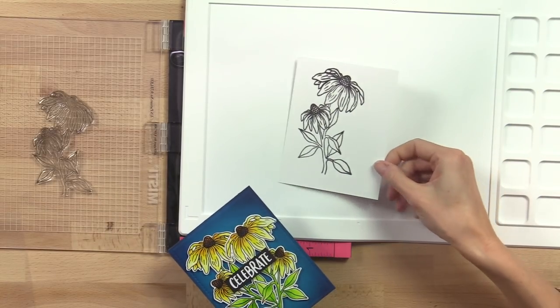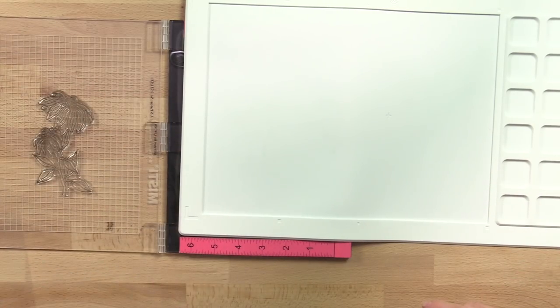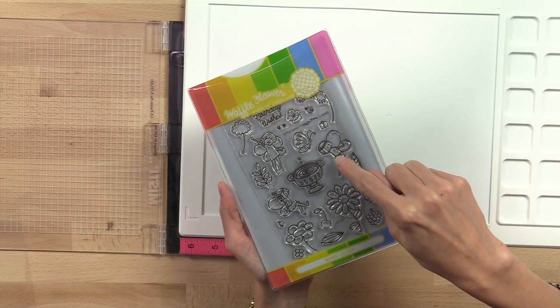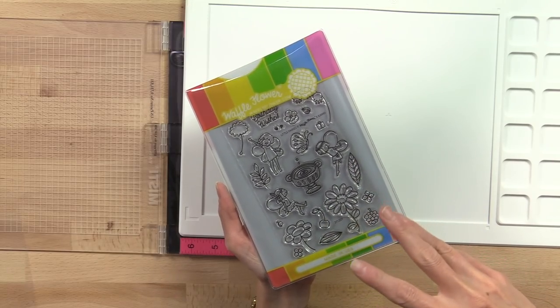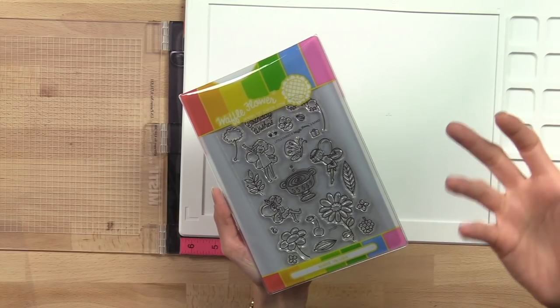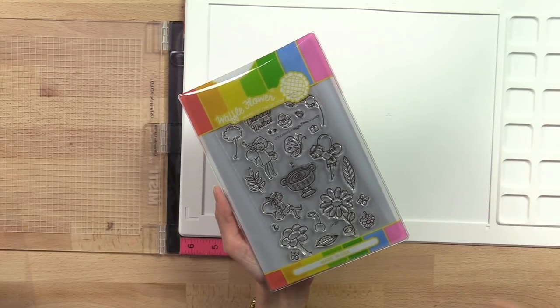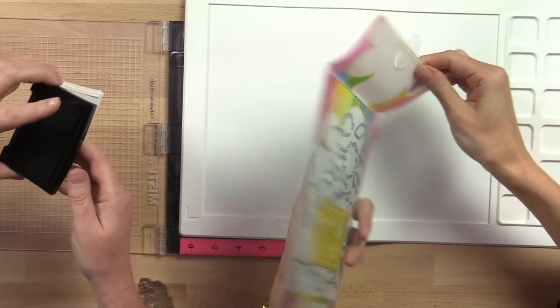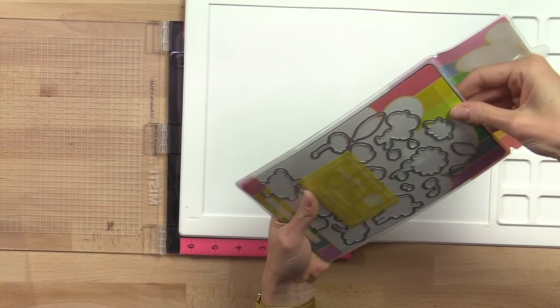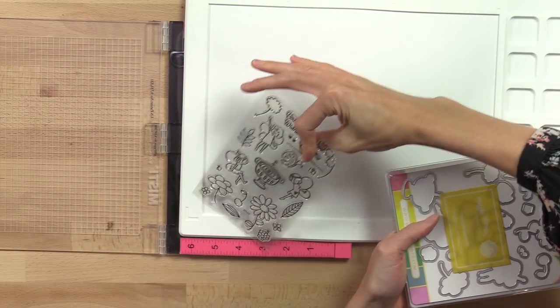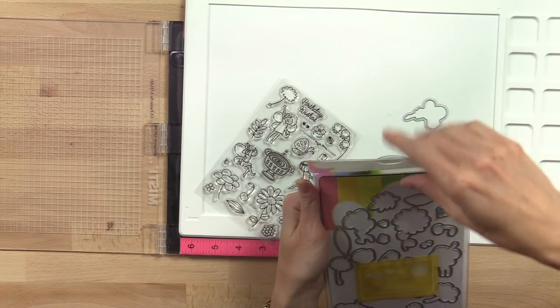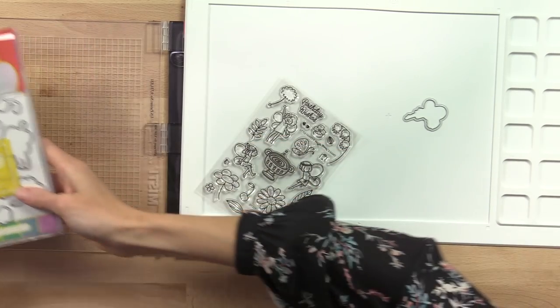We're going to use a different stamp set this time, this really cute little fairy stamp set. We're going to do this darling fairy here because, like I mentioned in the beginning of the video, critters are really fun to do mirrored stamping with because you can do spinner cards, which is what we're going to do here. That's great to have that image. I'm going to pull out the die for this fairy here, the matching die, and we're going to get the stamp set out as well.